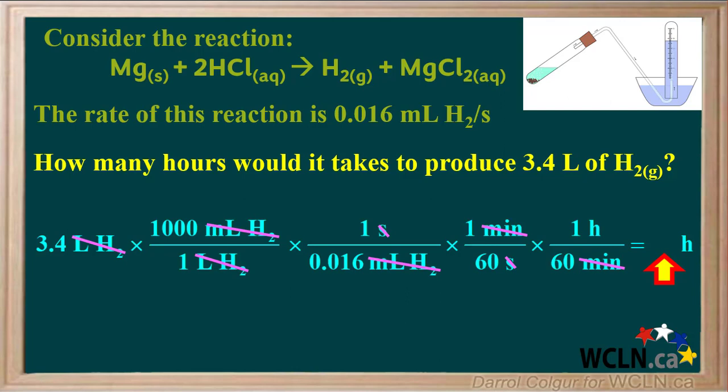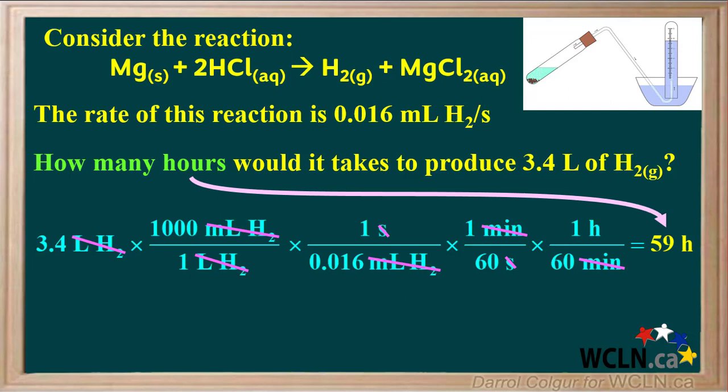To get the numerical answer, we'll start with 3.4, multiply by 1000, divide by 0.016, divide by 60, and divide by 60 again. Rounding to two significant figures, this comes out to 59. So our final answer: it would take 59 hours to produce 3.4 liters of hydrogen gas at this rate of reaction.